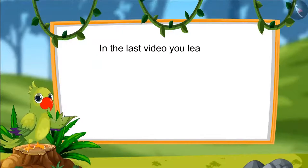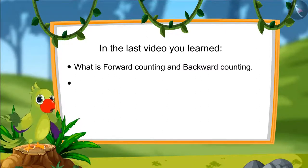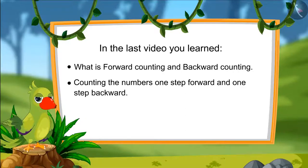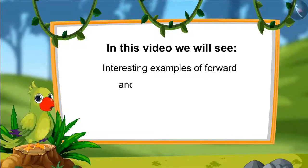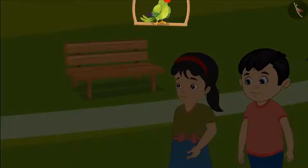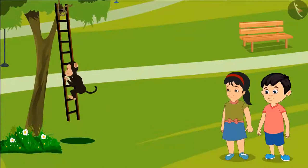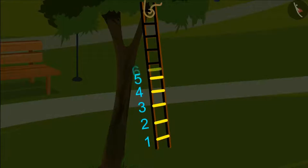Hello kids! I am Parrot! In the previous video you learnt what is moving forward and going backwards, and how to count 1 step forward and 1 step backwards in numbers. Today in this video we will see some very interesting examples of counting numbers forward and backwards! Today Chotu has gone to the park to play with his sister Pinky, and they saw a ladder hanging from a tree with a monkey playing on it. We have written the numbers 1 to 10 on the ladder so it will be easier to see how the monkey is playing!